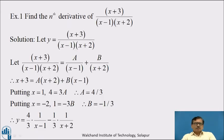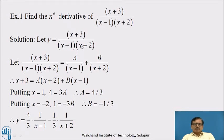Now we will see an example: find the nth derivative of (x + 3) / [(x − 1)(x + 2)]. Let y = (x + 3) / [(x − 1)(x + 2)]. We cannot write the nth derivative directly, so we use partial fractions to express this in the form 1/(ax + b). Let (x + 3) / [(x − 1)(x + 2)] = A/(x − 1) + B/(x + 2), since the degree of the numerator is 1, the degree of the denominator is 2, and both factors are linear and distinct.